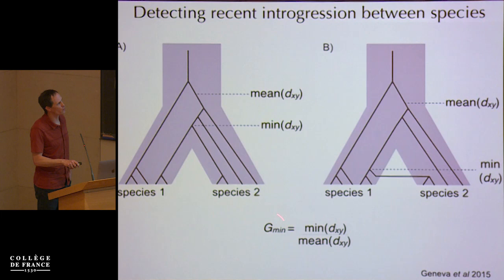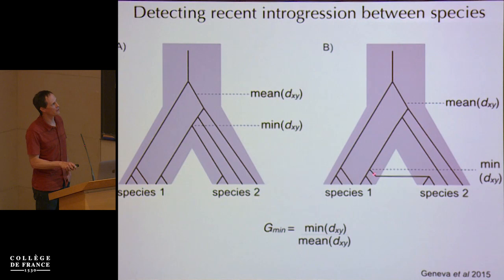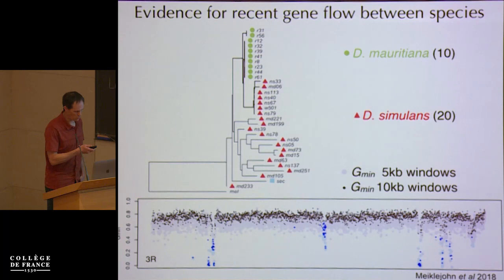Take the ratio of those two — this is called Gmin, developed by Anthony Geneva. This statistic has the nice feature that it distinguishes incomplete lineage sorting from recent introgression, because if there is a recent introgression event, then some alleles in one species will be much more similar to alleles from the other species than to other alleles from the recipient species. So Gmin will be small. We determine significance by coalescent simulations.